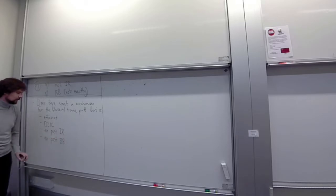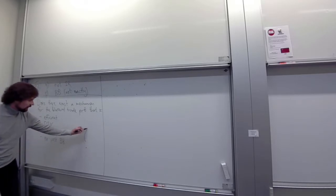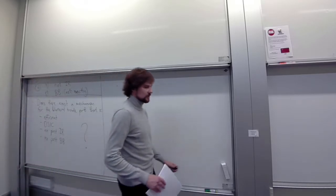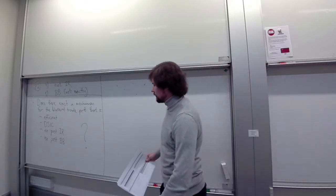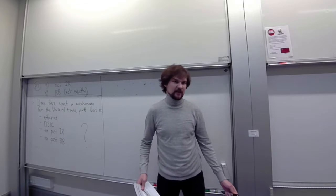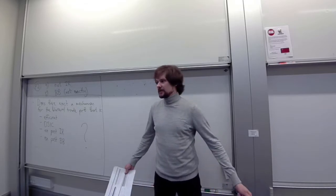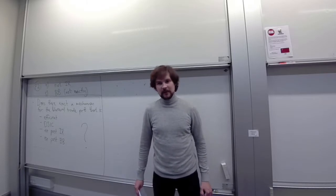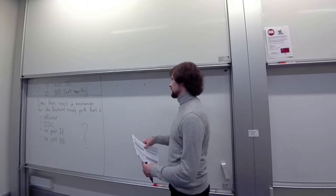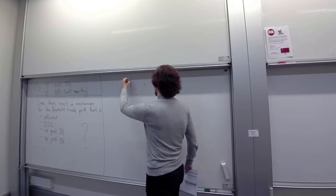So the question is: does there exist a mechanism like that? We know that VCG was not individually rational, but maybe we can find something else. VCG is not the only thing out there — or at least we have no reason to assume it is. Today we will see that it is pretty much the only thing, and we will prove this using a cool result called revenue equivalence.